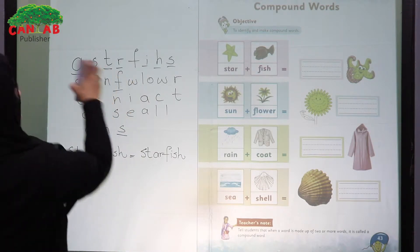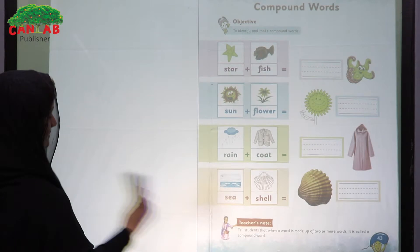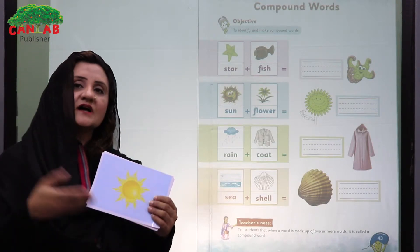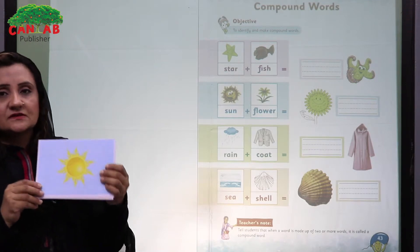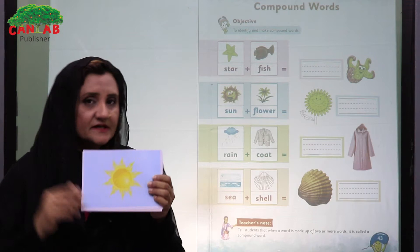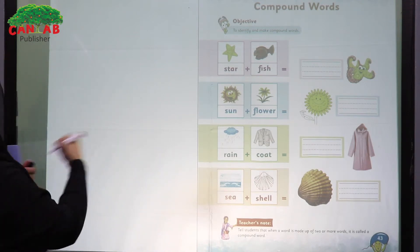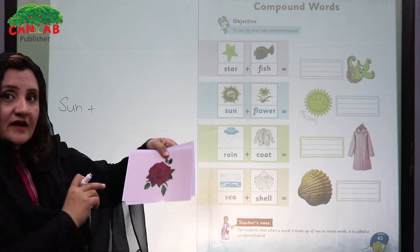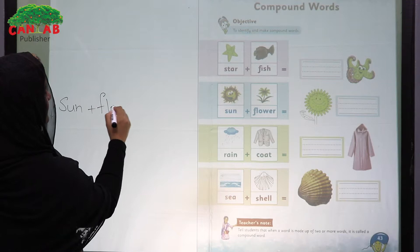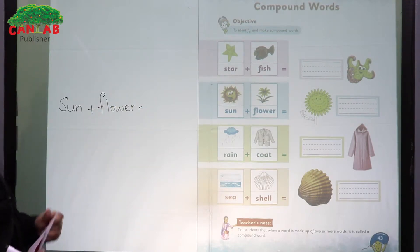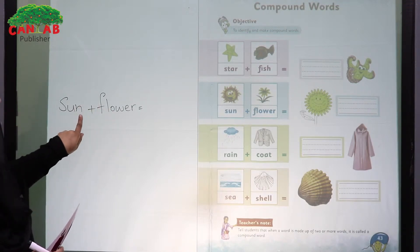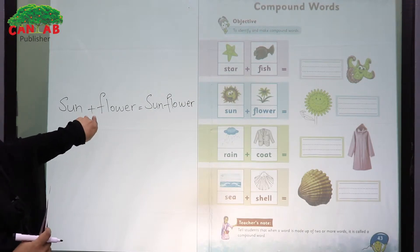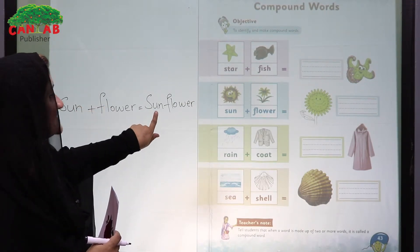After clarifying the concept, you can ask students to come one by one to the board and write, or show them flashcards and ask them to write the word. For example, show a flashcard and ask, 'What is this? This is a sun — come and write down sun here.' Then show the next: 'What is this? This is a flower — come and write the word flower.' Now ask them to add up these two words, and this is going to be sunflower. When we join two words together, we get a new word: sunflower.